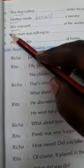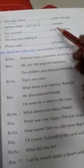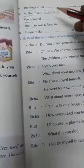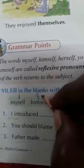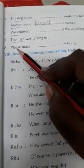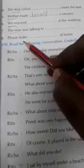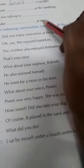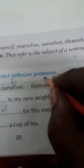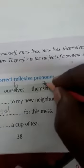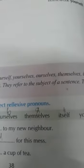Seventh one: the man was talking to blank. The man refers to third person 'he', so the answer is 'himself'. Next: please make blank at home. That is the third person plural — the answer is 'themselves'. They becomes 'themselves'.